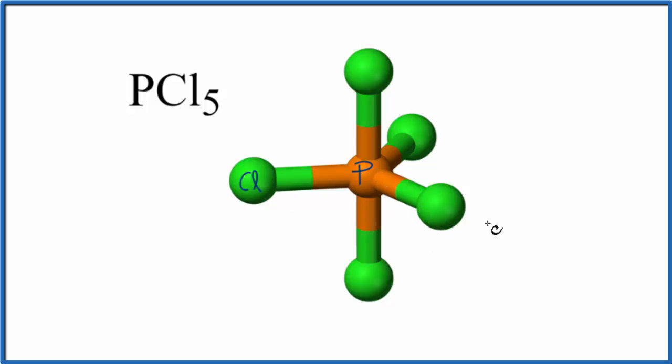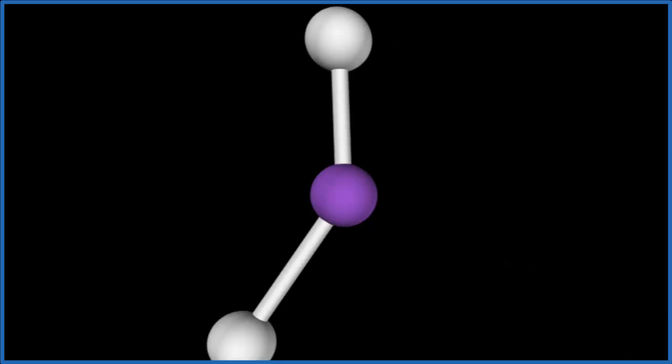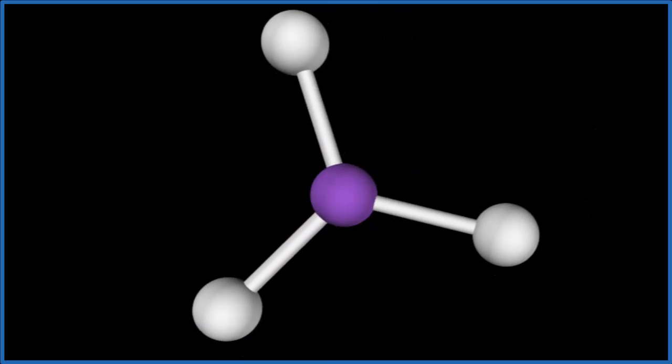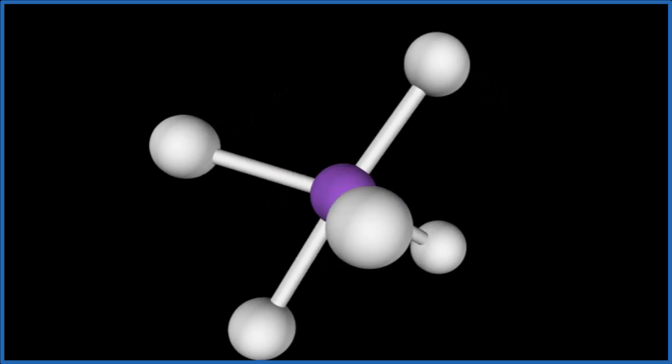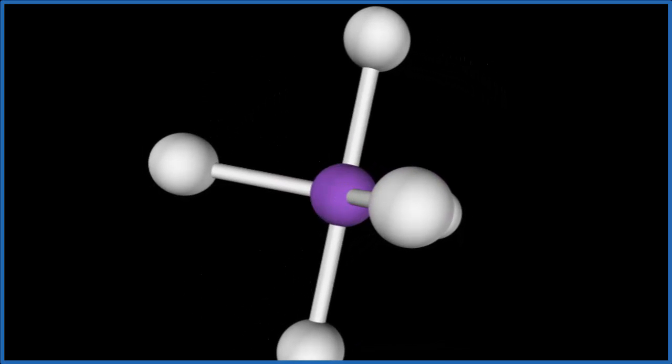Let's look at a visualization. The purple, that's the phosphorus. We're going to add chlorine atoms: one, two, they spread out, three, four, and five. So PCl5, this is the structure for PCl5.